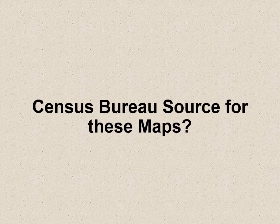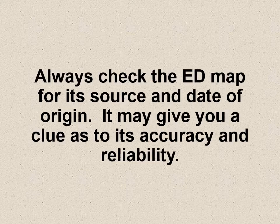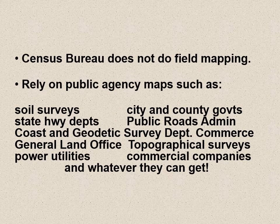So where does the Census Bureau get these maps from? Do they actually have a cartographer go up and down the streets? The reason we want to know the source and date is that it may give you a clue as to the accuracy and reliability of the map. The Census Bureau does not do their own field mapping — they rely on public agencies to provide the maps: soil survey maps, city and county government maps, highway departments, public roads, the Commerce Department, General Land Office, topographical surveys, Department of Interior, power utilities, and commercial companies.